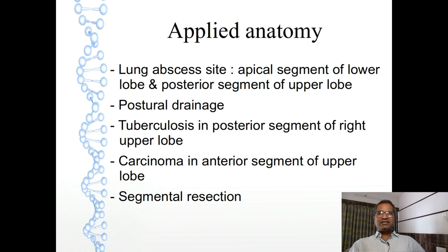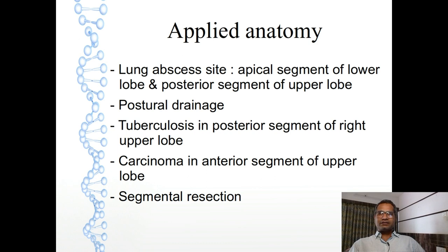Postural drainage is required for lung abscess. Give prone position to the patient so that purulent discharge can come out easily through the opening of the segmental bronchus into the trachea so that it can come out easily, but this is not always possible.